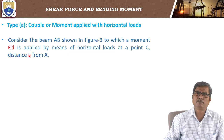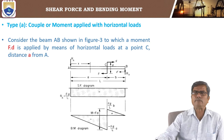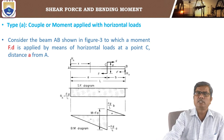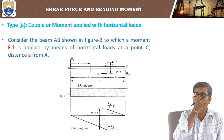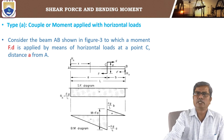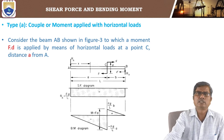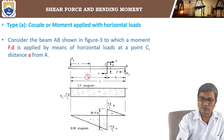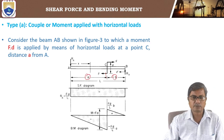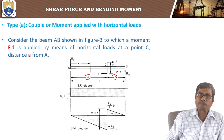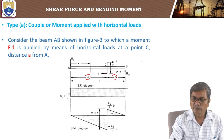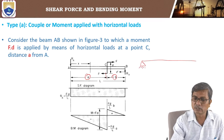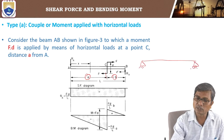Consider the beam AB shown in figure, to which a moment Fd is applied by means of two horizontal loads at C separated by distance d. The point C is at a distance a from end A and b from end B.